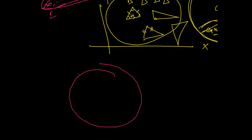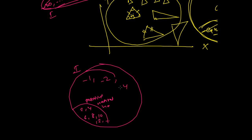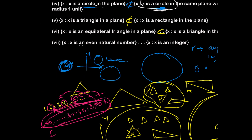So positive natural numbers are a small part of the integers. Integers include negative numbers like -1, -2, -14, and also positive ones like 3, 5, 7, and so on. Anything that falls within the even natural numbers is also a member of the bigger set of integers. So yes, definitely the first set — even natural numbers — is the subset of the second set, which is integers.